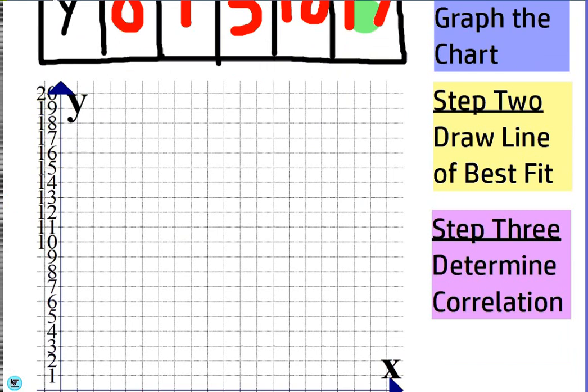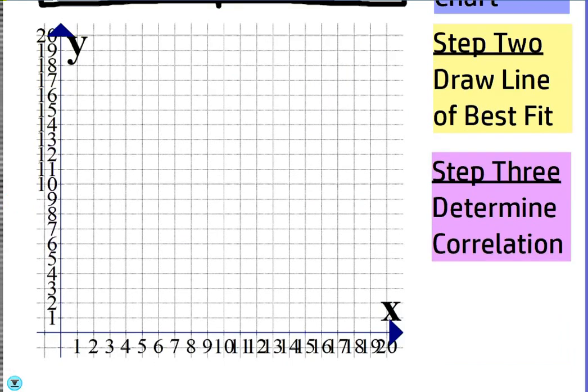0,0 is pretty obvious where that goes. I need somebody to read those back to me so I don't have to go back up. Thank you. 2,7, is that what it was? No, 2,3, right? Yeah.